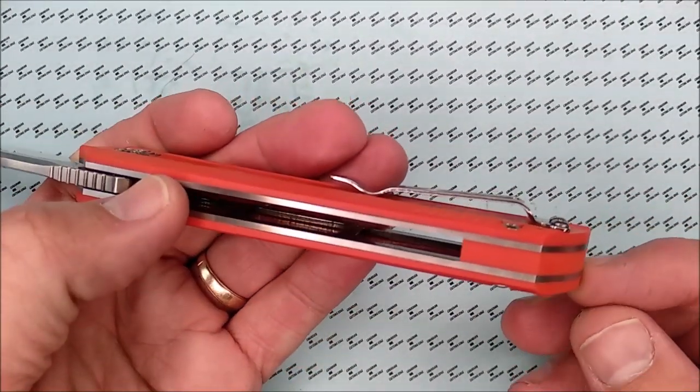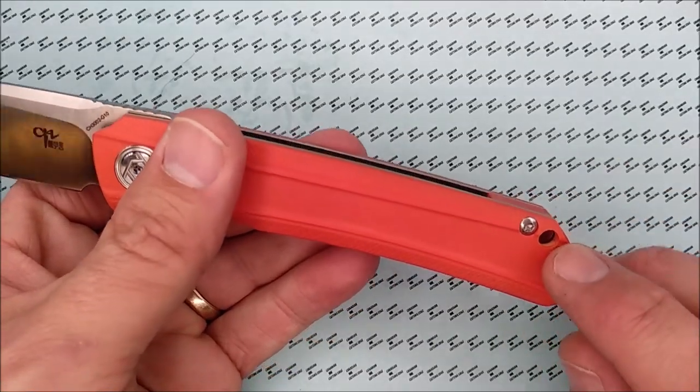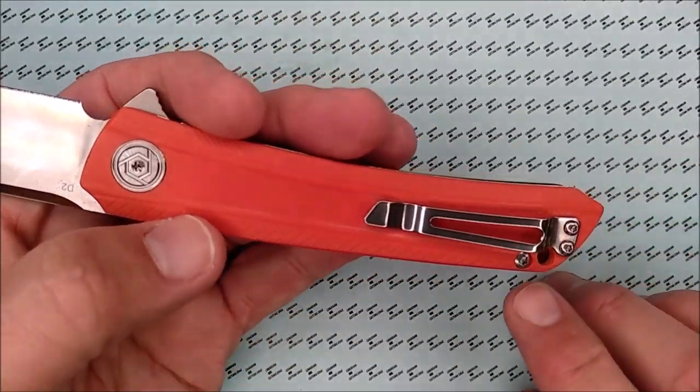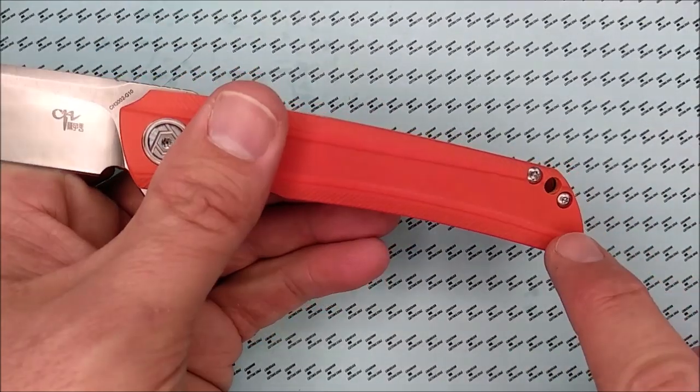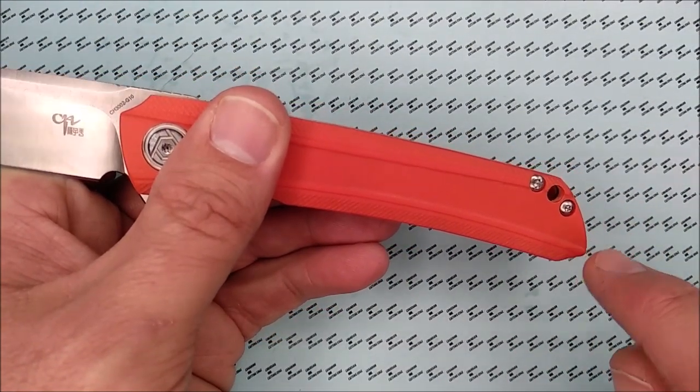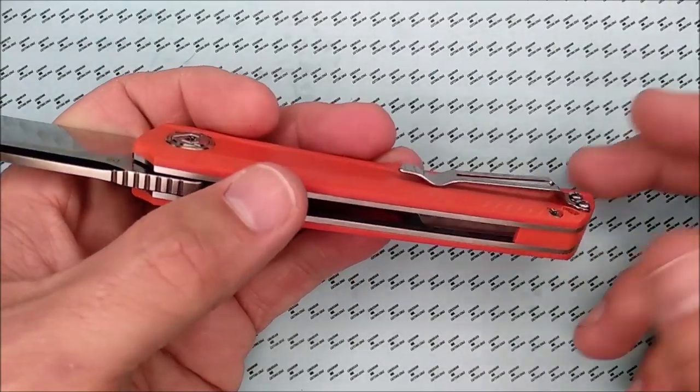And we've got that small backspacer, a lanyard hole that goes right through that backspacer so it's a nice tube. Placement for that lanyard hole is actually pretty good. I'd like it to be down here, actually below that screw instead, but that spot isn't terrible, not bad.